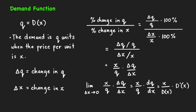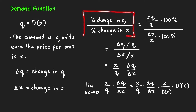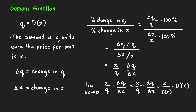Suppose we have this demand function q equal to d of x. This means that the demand is q units when the price per unit is x. To develop a general formula for elasticity of demand, we consider the ratio of percent change in quantity demanded q over the percent change in the unit price x. Suppose that the change in the unit price is denoted by delta x, and the resulting change in q caused by this change in x is denoted by delta q.